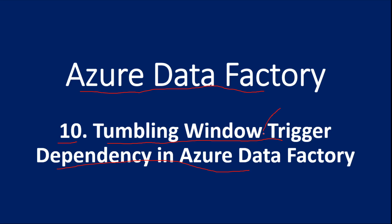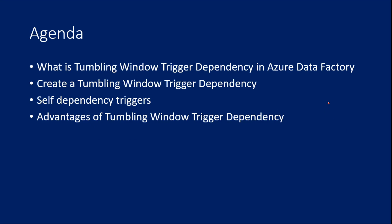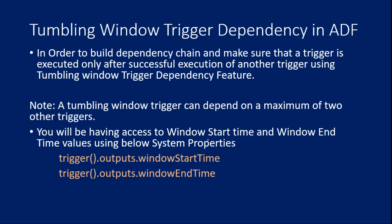A trigger in Azure Data Factory is the one which actually invokes your pipeline to run. The agenda of this video is to discuss what is tumbling window trigger dependency, how to create it, what self-dependency triggers are, and their advantages.